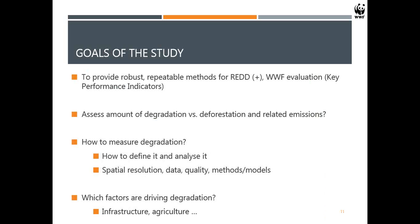The goals of this study are to provide robust, repeatable methods for REDD. WWF is involved in many emissions reduction programs, so we like to have a toolbox available to help assess degradation. We also monitor our projects and programs worldwide and need key performance indicators — KPIs — to know if deforestation is decreasing and whether our conservation projects are having an impact. The overall aim is to assess the amount of degradation versus deforestation and the related emissions.